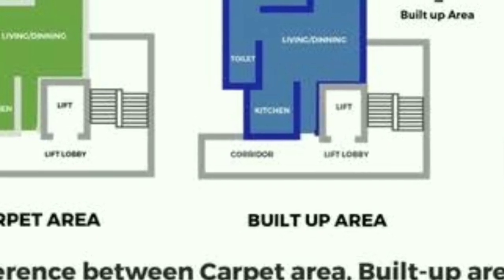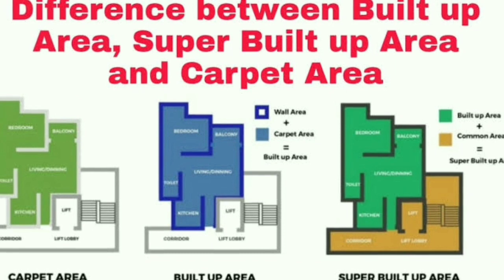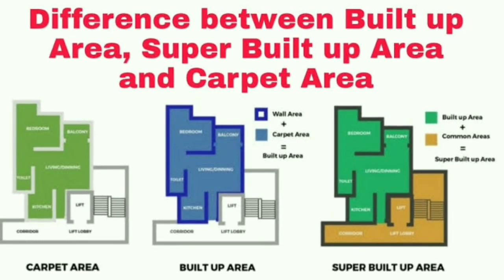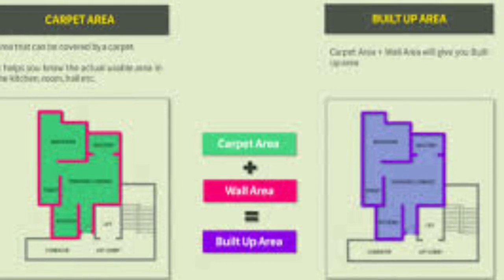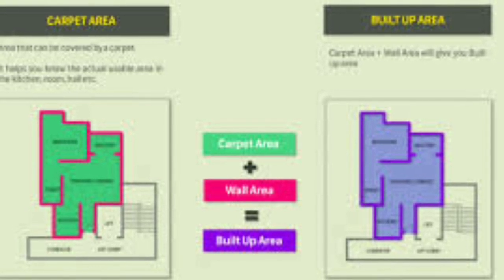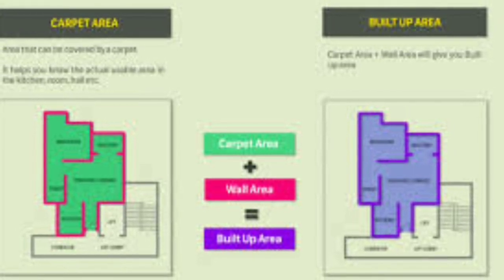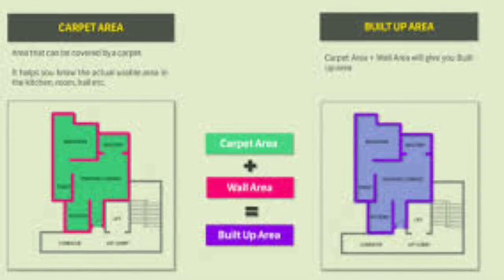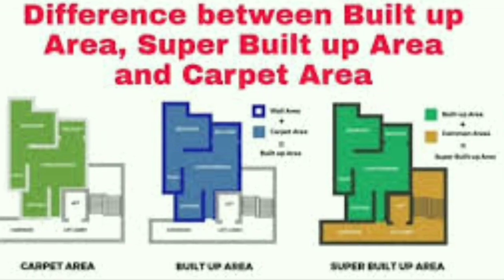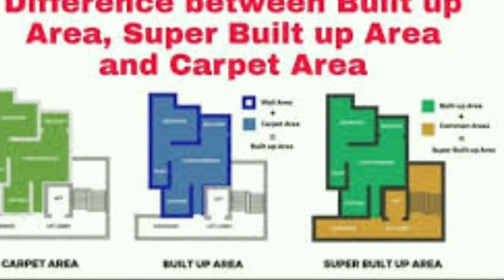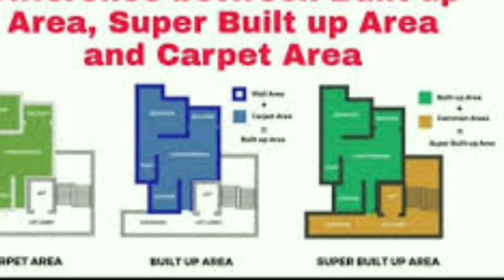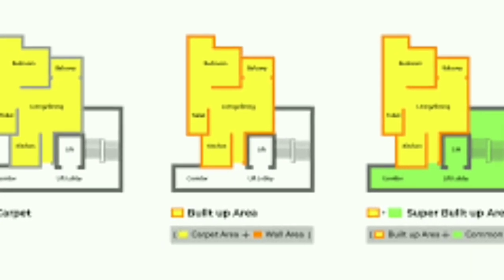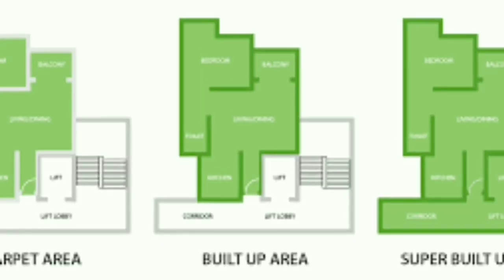That is the carpet area, also called the floor area. It is the usable area of a building. Generally, the carpet area is around 85–90% of the built-up area. The inside area will be defined by the wall area. The carpet area is equal to the built-up area minus the wall area.